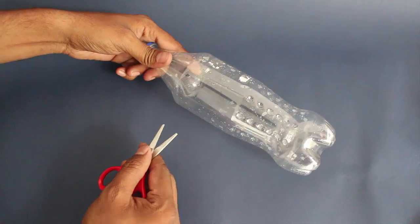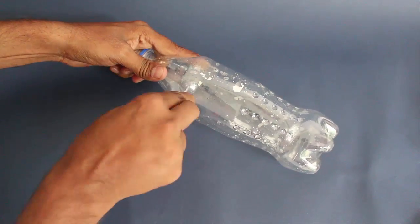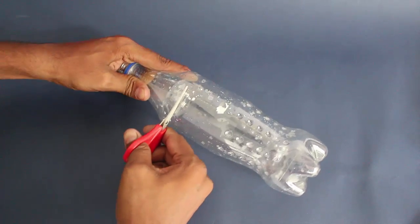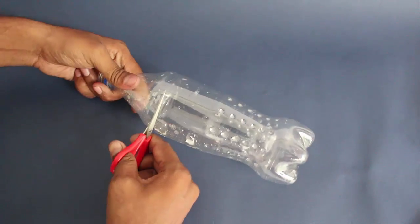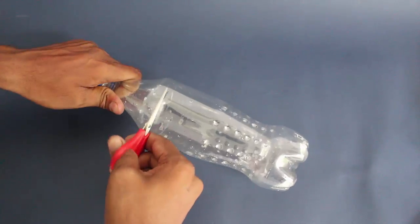Cut both bottles about 10 cm from their mouth. The edges would be jagged, so trim the edges to get two conical shapes.